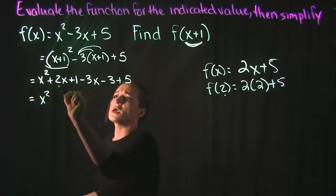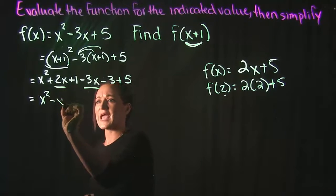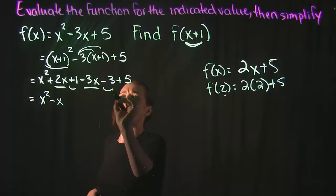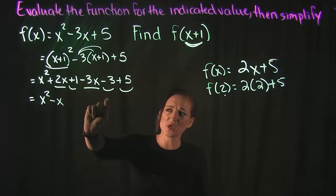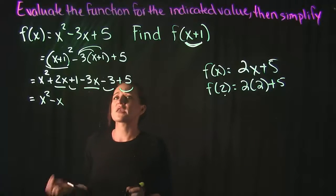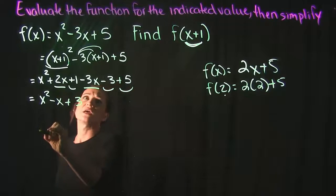Next we have 2x minus 3x which is a negative x, and then we have 1 minus 3 plus 5. So 1 minus 3 is negative 2, negative 2 plus 5 makes that a positive 3.